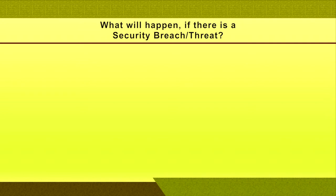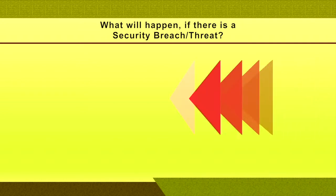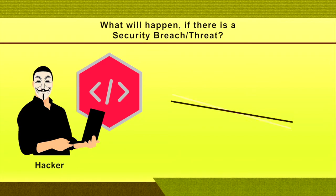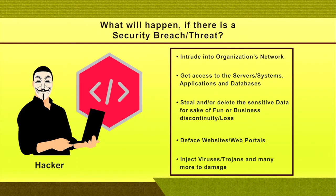What happens if there is a security breach or threat? Hackers take advantage to intrude into the organization's network, access server systems, applications and databases, steal or delete sensitive data for fun or to cause business loss, deface websites or web portals, and inject viruses, trojans and more to cause damage. To avoid all these things, secure programming or defensive programming is essentially needed.